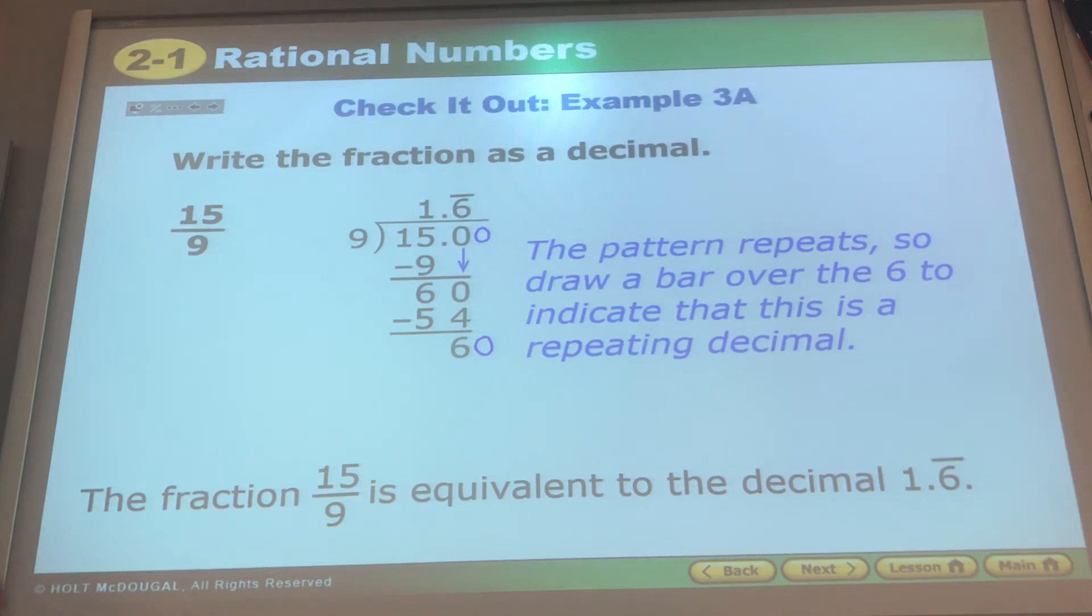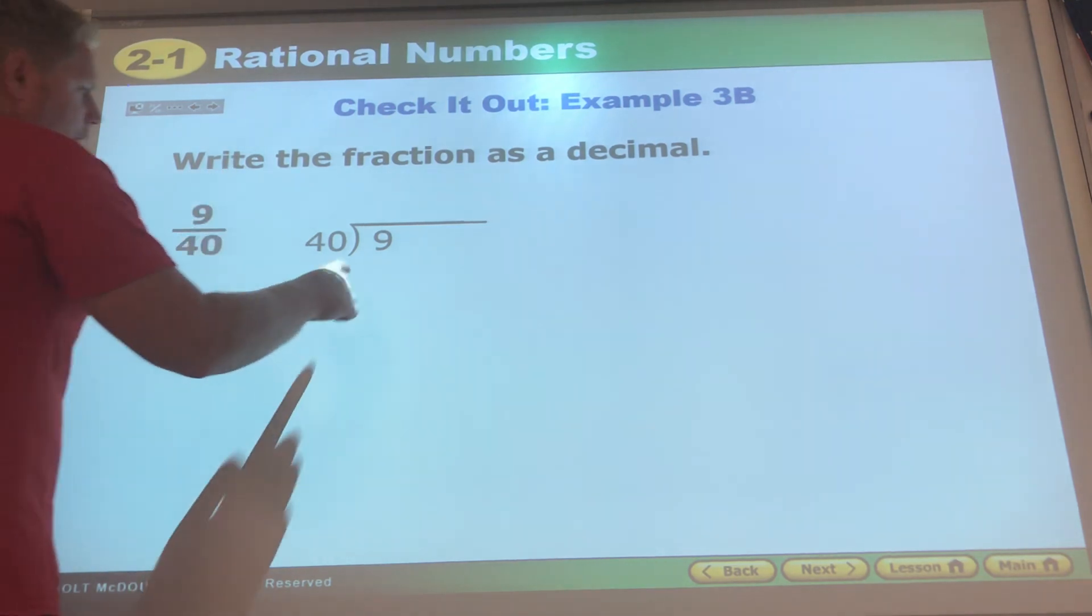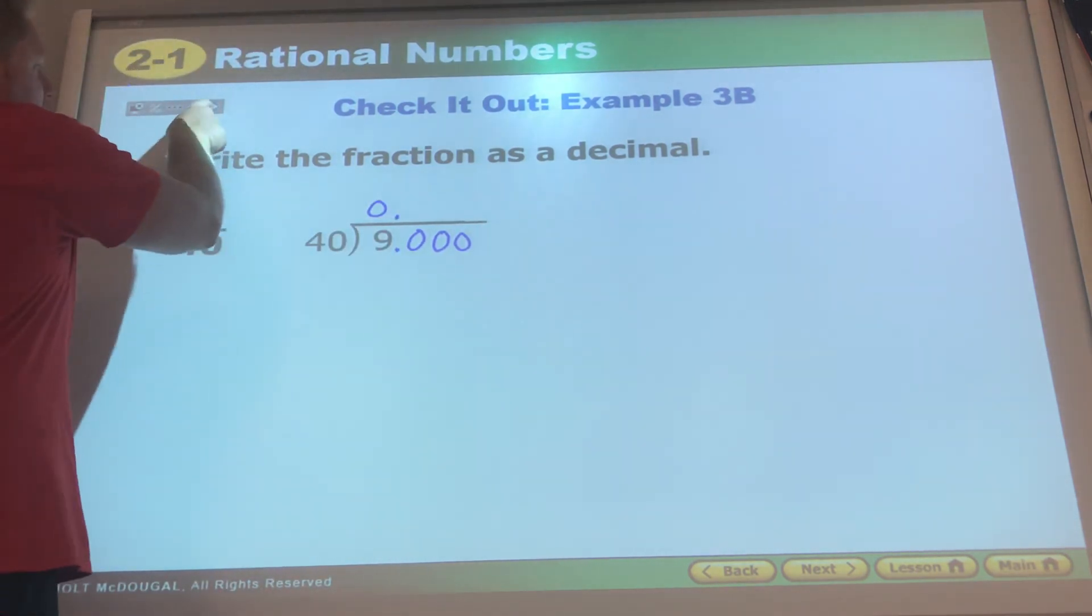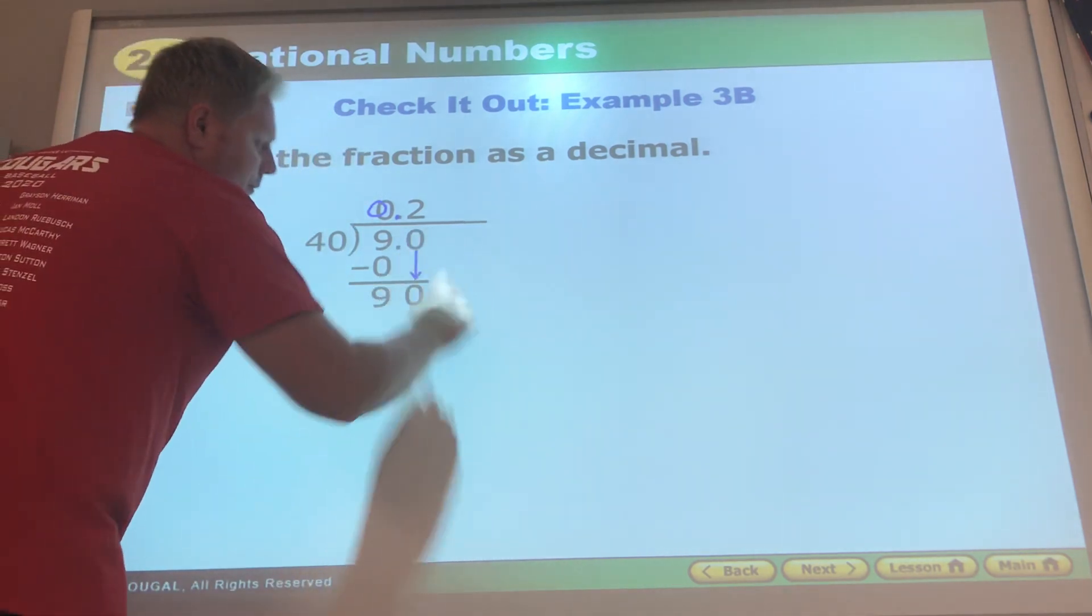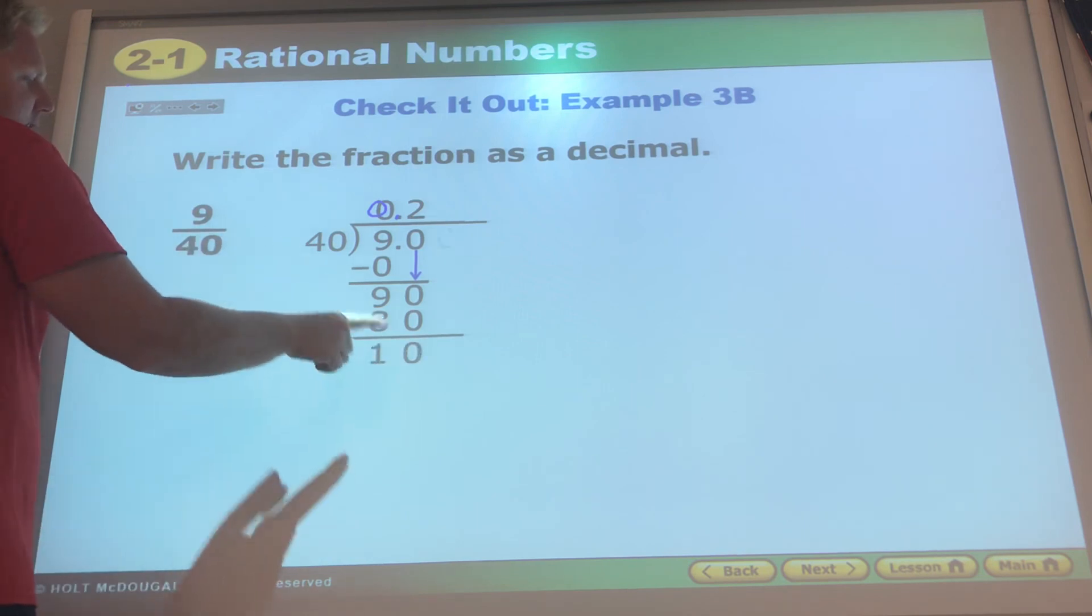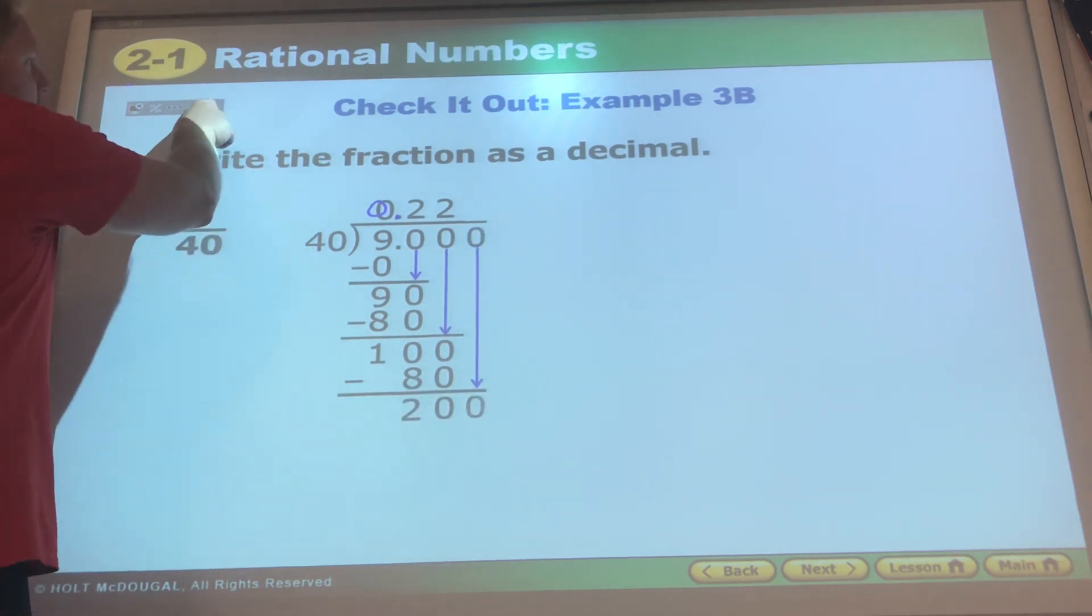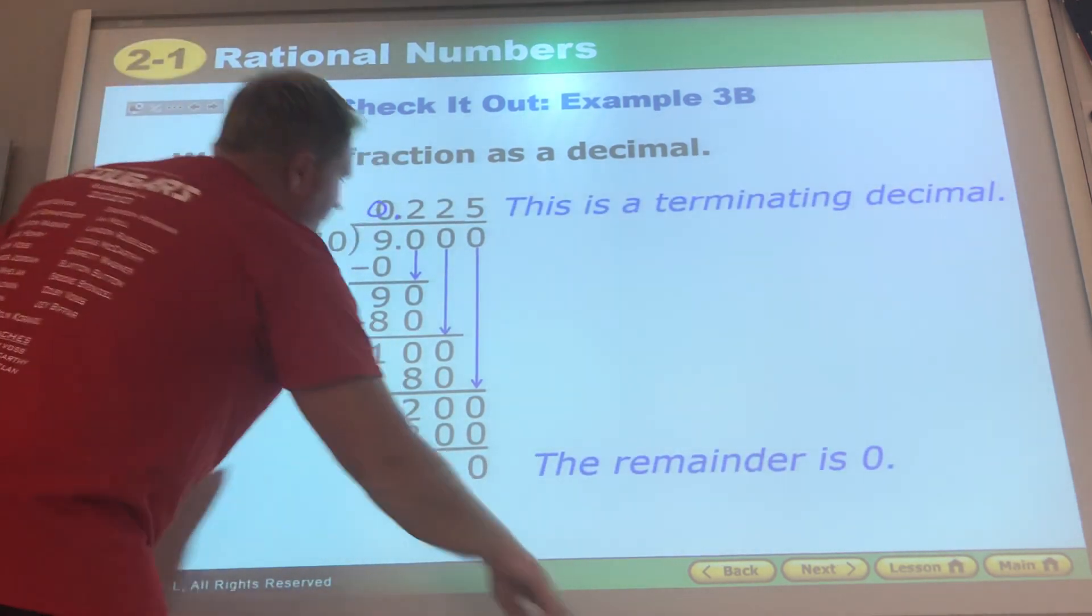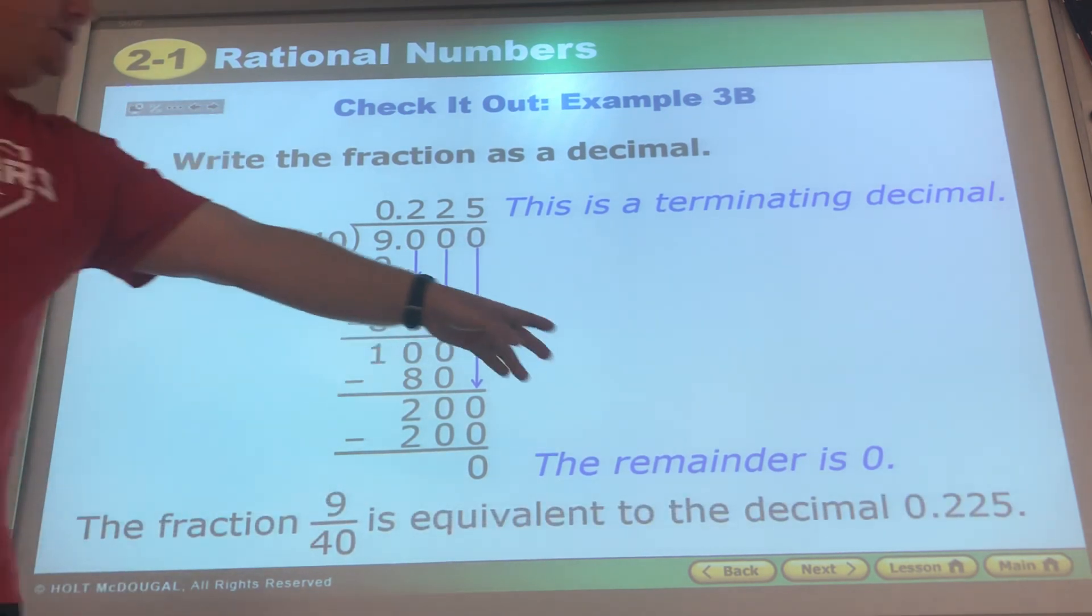Last one we'll try and then you're welcome to start it on your own. Write the fraction as a decimal: 9 goes inside, 40 goes to the outside. I always like to put my decimal right away and I think, I know 40 will not go into 9 so I put a zero as a placeholder. They do the math, then we have 90, 40 will go into 90 twice, that makes 80, there's 10. They bring a zero down, it'll go there twice, that's 80, that's 20. Bring a zero down, 40 will go into 200 five times, we get to zero. It is a terminating decimal, zero is the remainder, so 9/40 is equal to 0.225.